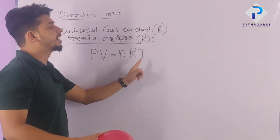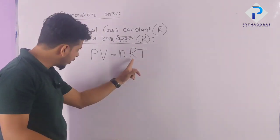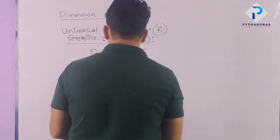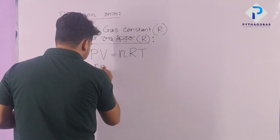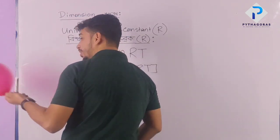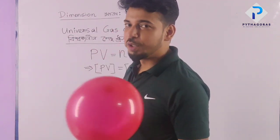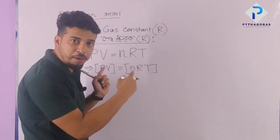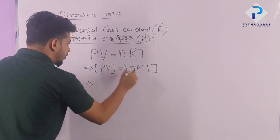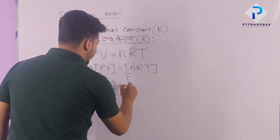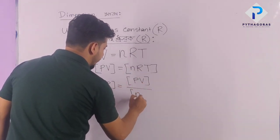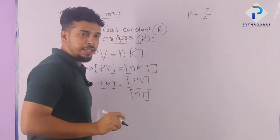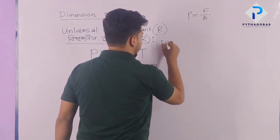The relation is PV equals nRT, where n means number of moles and R means universal gas constant. So the dimension of R is equal to pressure times volume divided by n times T. Pressure is equal to force divided by area.